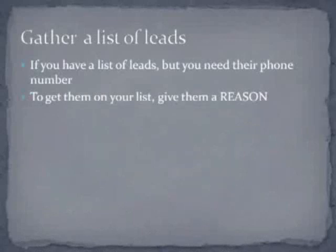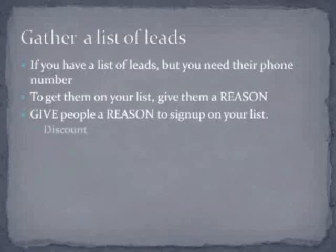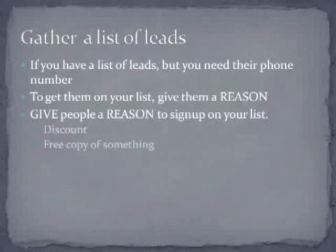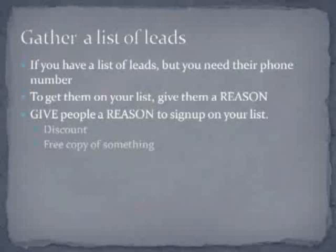To get them on your list, you need to give them a reason — just like any list. Give them a reason to sign up: whether it's a discount if you're a restaurant or gym, a free copy of something they're willing to pay for — maybe a diet plan for a gym. Think of something people pay for that you can deliver quickly. A free copy of something or a special deal: if they sign up on your list within the next seven days, you will give them a special deal.